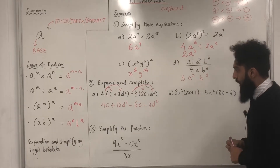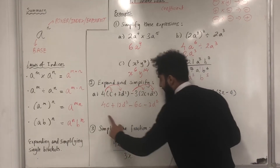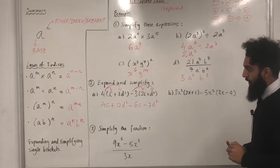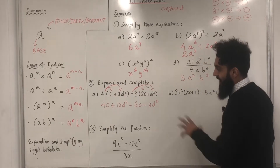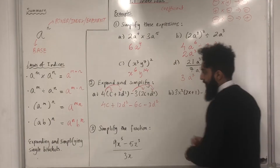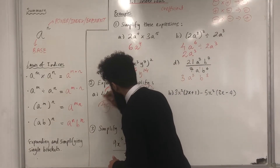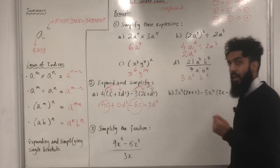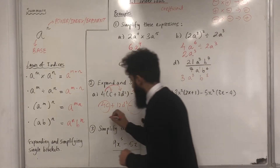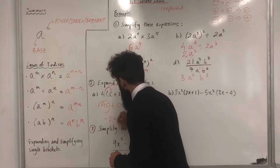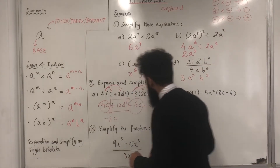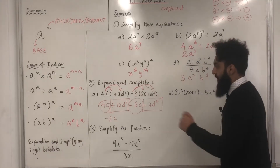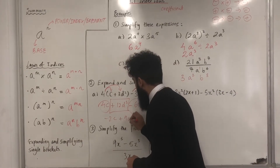Now we simplify by collecting like terms. Simplifying the C terms: 4C subtract 6C gives negative 2C. Positive 12D squared minus 3D squared gives positive 9D squared.